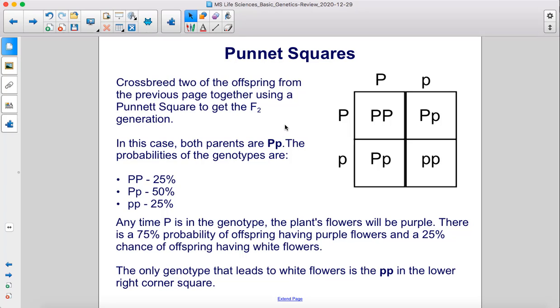The probabilities of the genotypes are 25% for two capital P's, 50% for one capital P one lowercase p, and 25% for two lowercase p's. Any time capital P is in the genotype, the plant's flowers will be purple. There is a 75% probability of offspring having purple flowers and a 25% chance of offspring having white flowers. The only genotype that leads to white flowers is the two lowercase p's in the lower right corner square.